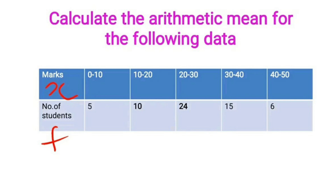Next we will see the arithmetic mean for continuous data. The marks class intervals are: 0–10, 10–20, 20–30, 30–40, 40–50. The number of students (frequency f) for each interval: 0–10 → 5, 10–20 → 10, 20–30 → 24, 30–40 → 15, 40–50 → 6. Here, marks represent the class intervals and number of students is your frequency f.